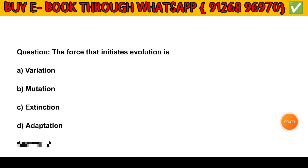Question number 15. The factor that initiates evolution is: Option A — Variation. Option B — Mutation. Option C — Extinction. Option D — Adaptation. The answer is Option A: Variation.